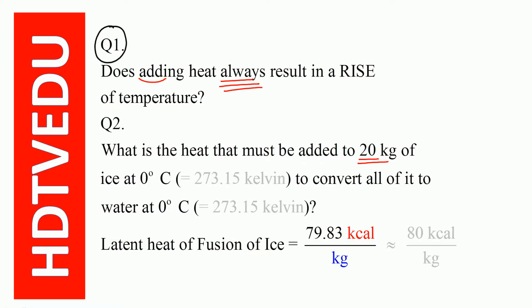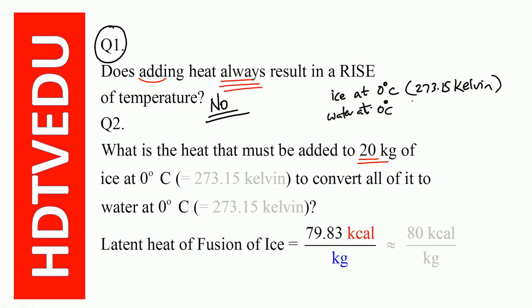Question number one: does adding heat always result in a rise of temperature? The answer is no, not always. When you go from ice at 0 degree Celsius (273.15 Kelvin) to water at 0 degree Celsius, you do have a phase change. You do absorb heat, but there is no rise in temperature.